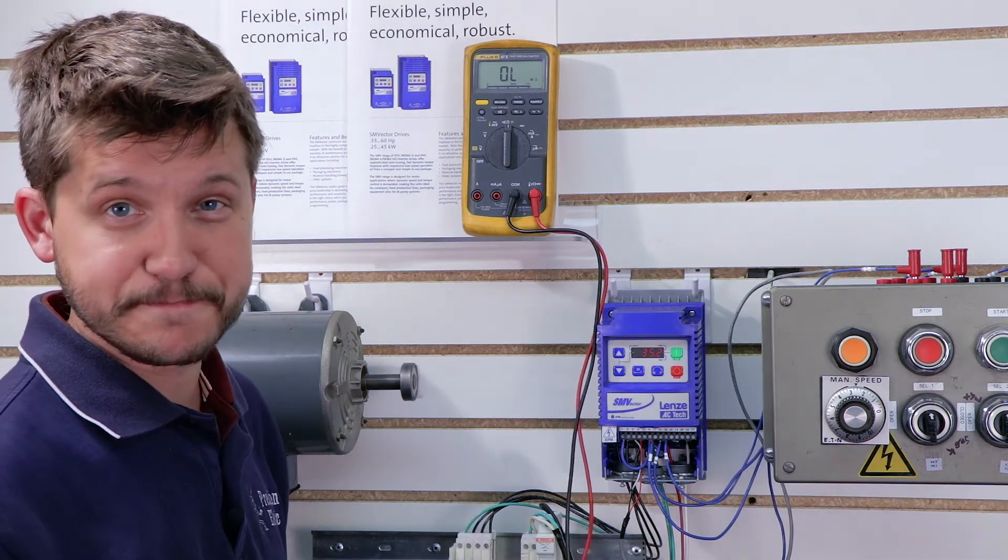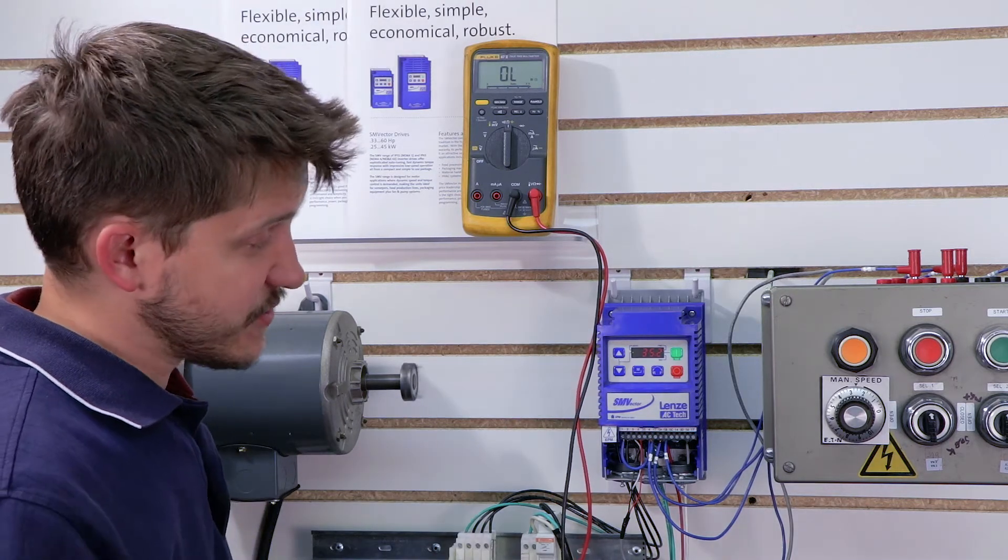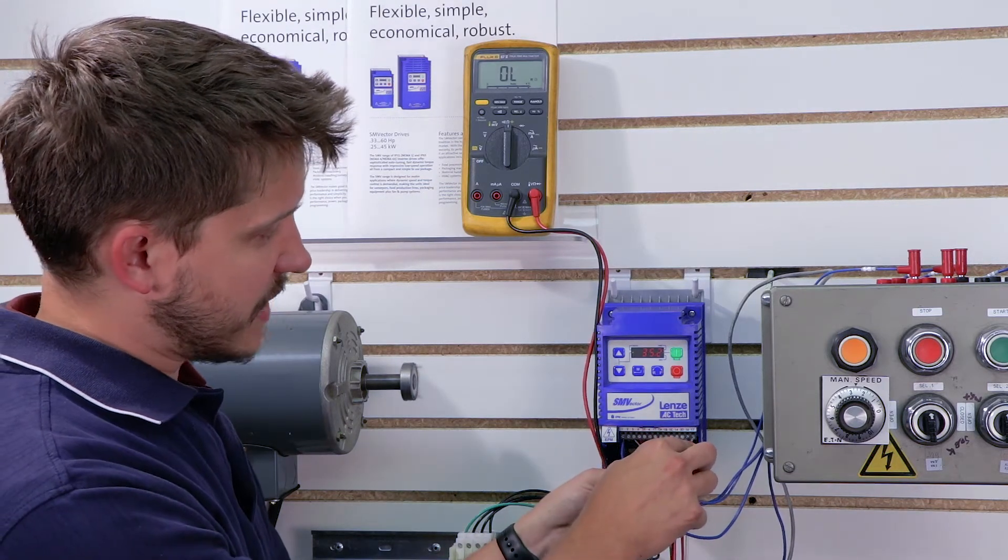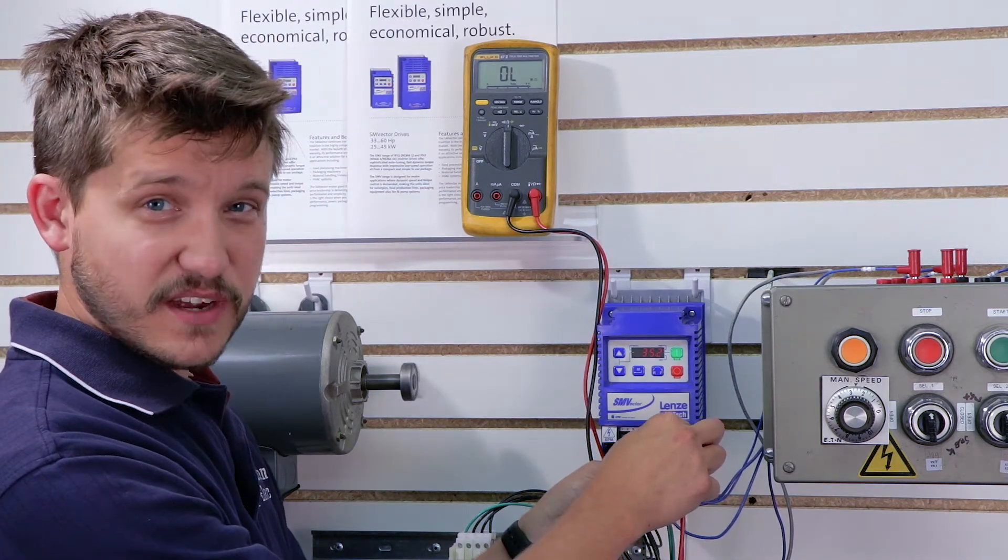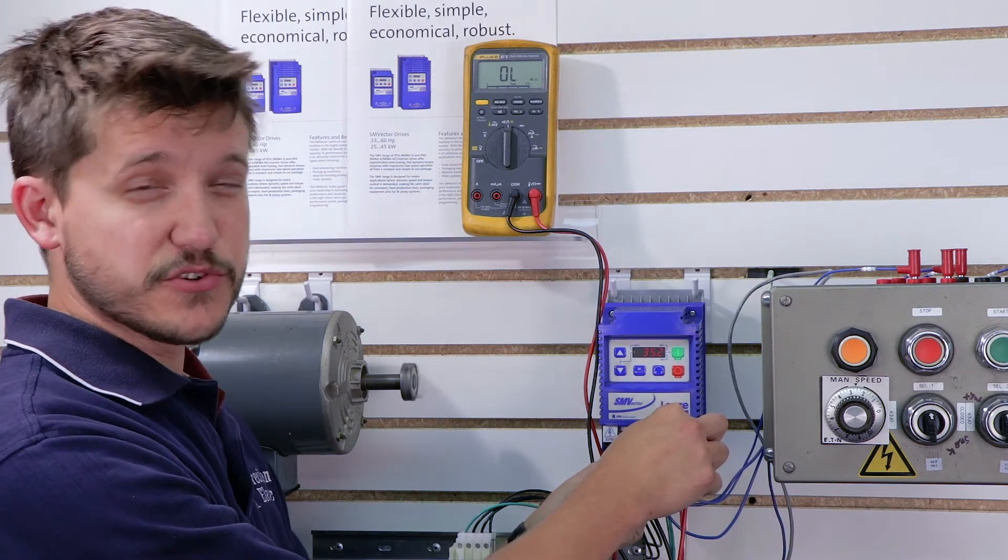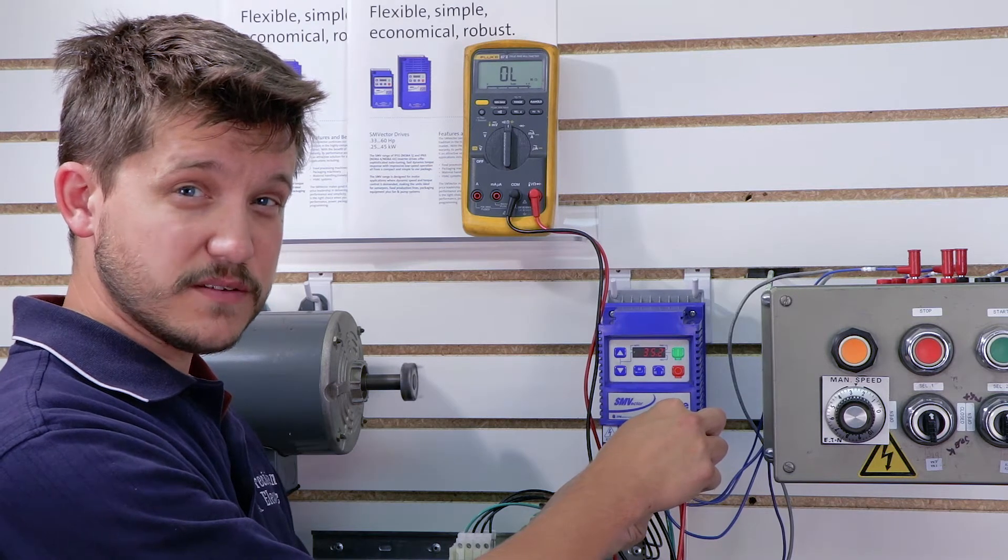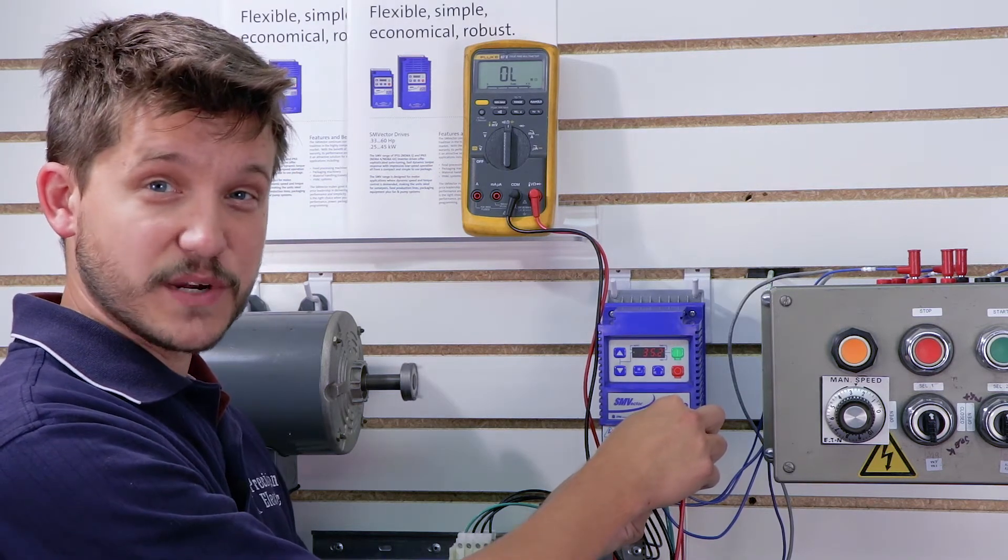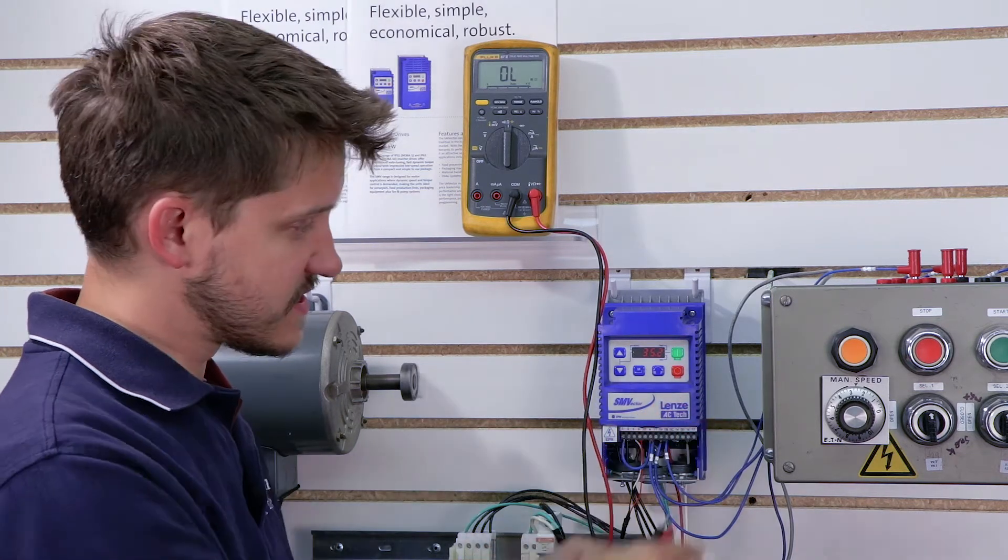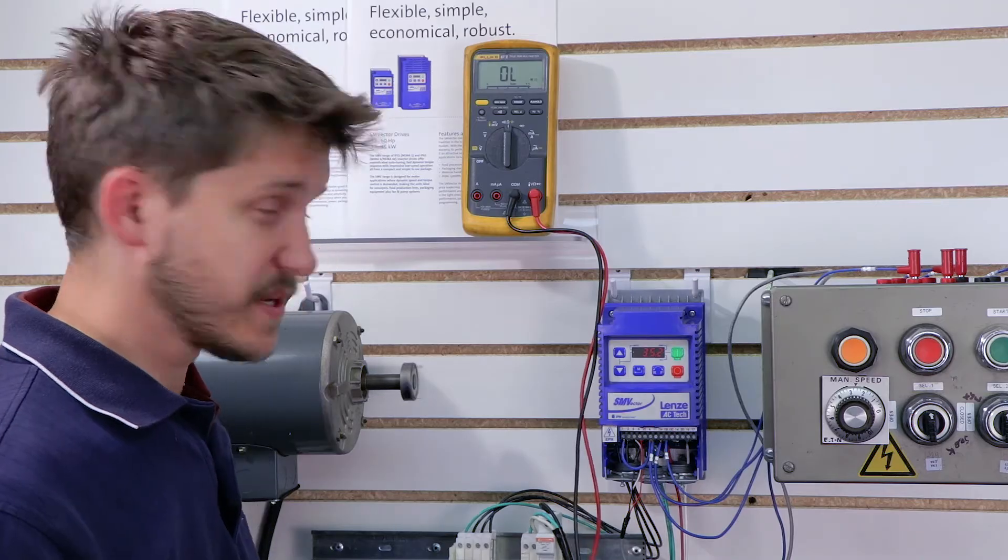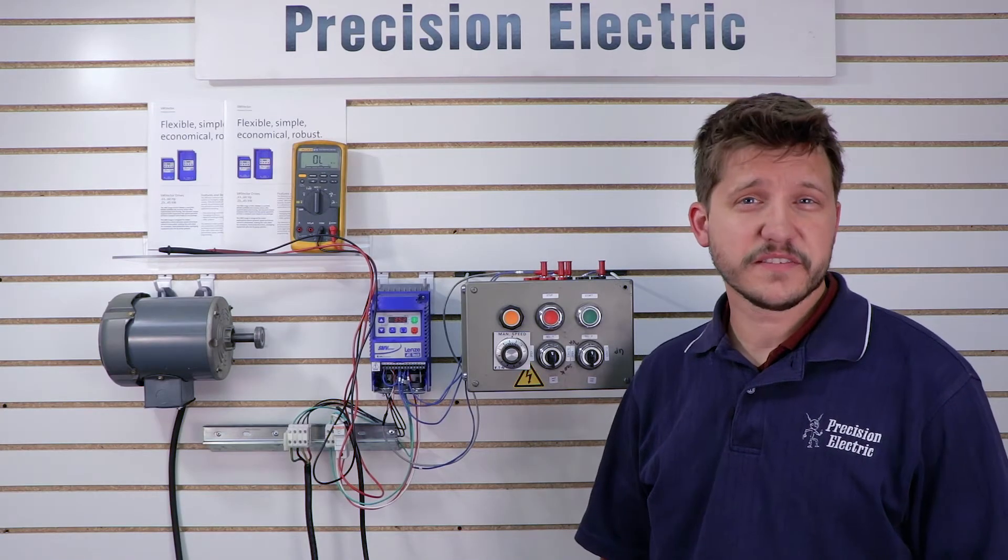Other than that you do have a relay output between terminal 16 and 17. I don't have mine programmed. If I put my leads on it, it says it's open right now because it's not programmed. I wanted to test my relay. Usually you can hear it click in when it turns on, but when it clicks in you should see continuity. So in other words that relay has closed. So that's another input you can test with your meter.